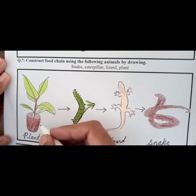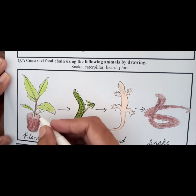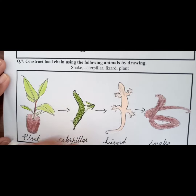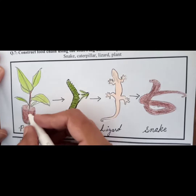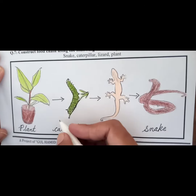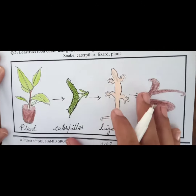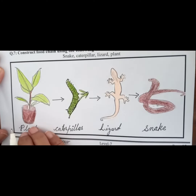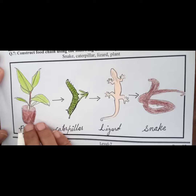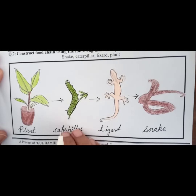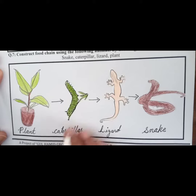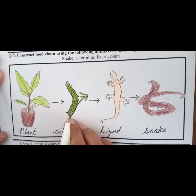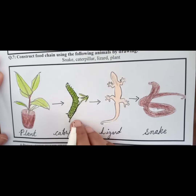The plant is basically a producer — it makes food with the help of photosynthesis. It is one of the major parts of any food chain, and any food chain should start with the producer. This plant will be eaten by the caterpillar, so the caterpillar will be called the primary consumer, because it is eating the plant first.